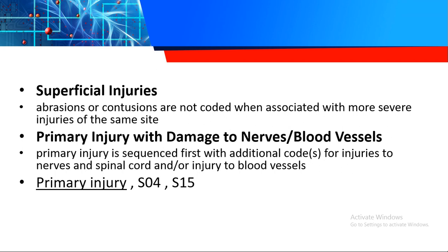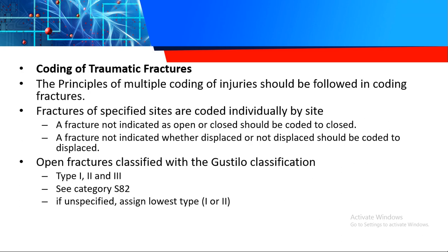That guideline about superficial injuries applies when talking about the same site. In scenarios, they often won't specify the exact anatomy — it's up to you to determine the anatomical location. Next guideline: primary injury with damage to nerves and blood vessels. When there's damage to nerves — code S04 — and blood vessels — code S15 — always code the primary injury first, because there's no damage to nerves or blood vessels if there's no injury at all.